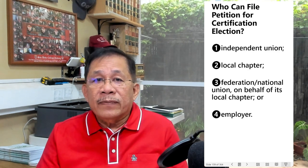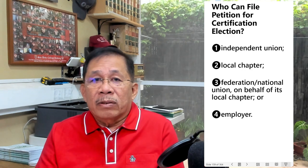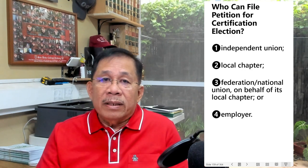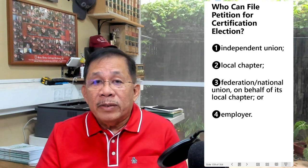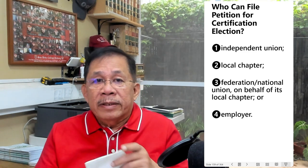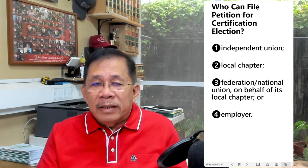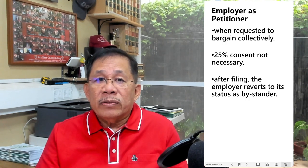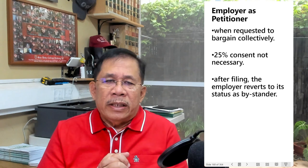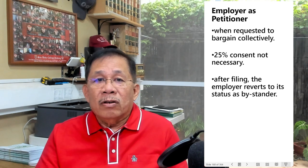A petition for certification election can be filed by an independent union, or by a local chapter that has been issued a charter certificate by a federation, or by a federation or national union on behalf of its local chapter. An employer can also file a petition for certification election, but only when requested to bargain collectively. When an employer files the petition, it is not necessary to support it with the written consent of 25% of the employees within the bargaining unit. After filing, the employer reverts to its status as bystander.